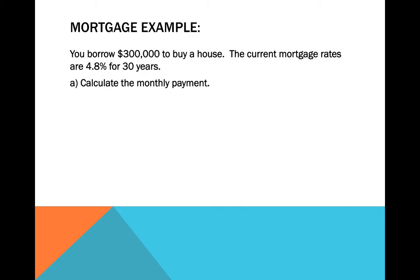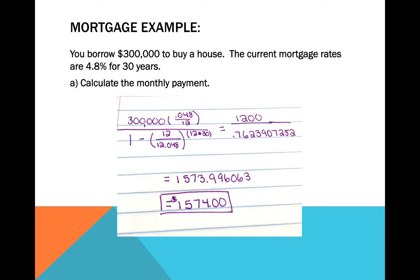Here's an example of a problem. We're going to borrow $300,000 to buy a house, and the current mortgage rates are about 4.8% if we're borrowing for 30 years. The first thing I'm asked to do is calculate the monthly payment, which I've done here. We borrowed $300,000, that's the P.